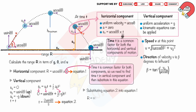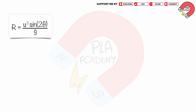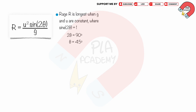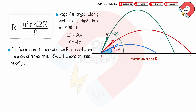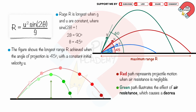The range r is longest when g and the initial speed u are constant, which happens when sin 2θ equals 1. This means 2θ equals 90 degrees, so theta equals 45 degrees. The longest range is achieved when the angle of projection is 45 degrees with a constant initial speed u. The red path shows the motion without air resistance — this is projectile motion. The green path shows motion with air resistance, which causes both the maximum height and the range r to be shorter.